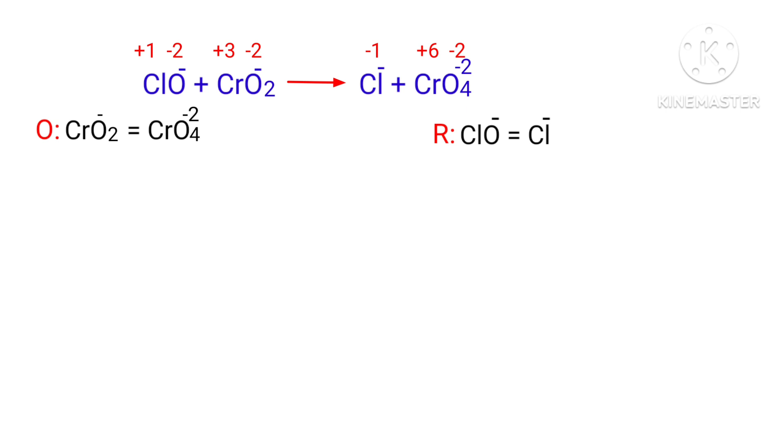In the ion electron method, one reaction is divided into two half reactions, and then they are balanced and added together.